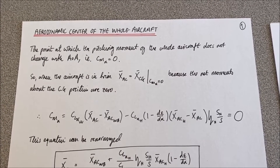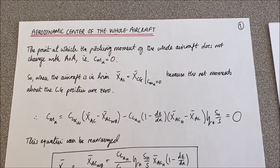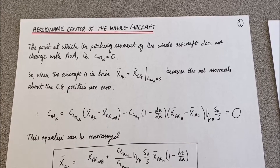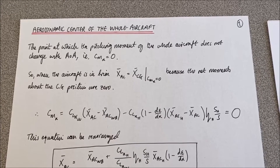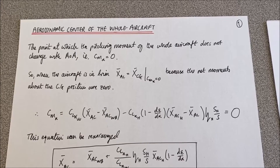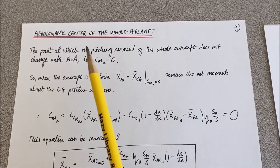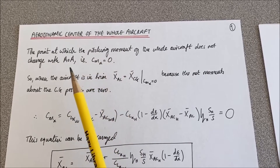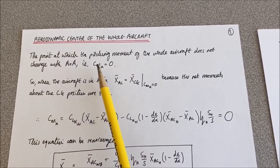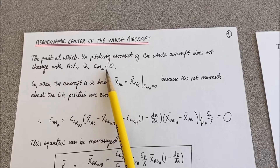The next thing we need to discuss is the aerodynamic centre of the whole aircraft. We looked at what was meant by the aerodynamic centre of an aerofoil — it was the point at which, by changing angle of attack, moments about that point are constant. The same can be applied to the whole aircraft: the pitching moment of the whole aircraft doesn't change with angle of attack at this point, the aerodynamic centre of the whole aircraft. In other words, the pitch moment coefficient with respect to alpha is zero.